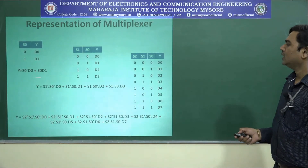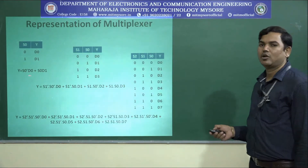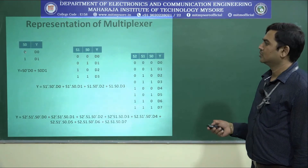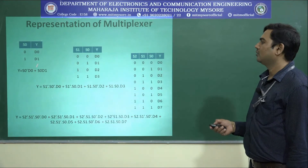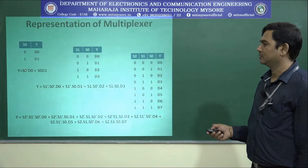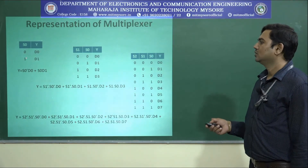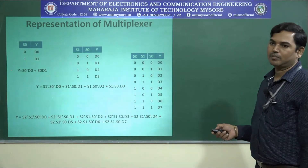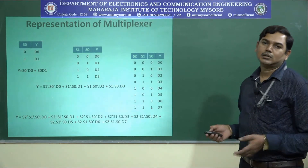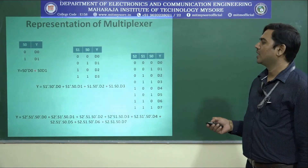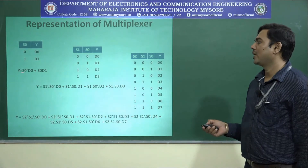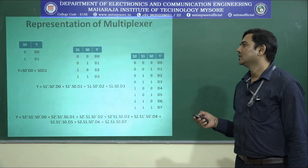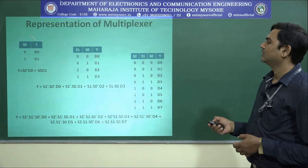The output equation Y in terms of S-naught, D0, and D1 can be represented using min-term representation. When S-naught is 0, we get S-naught-bar dot D0; when S-naught is 1, we get S-naught dot D1. So Y equals S-naught-bar D0 plus S-naught D1. In HDL data flow description, you would write: assign Y = S_naught_bar AND D0 OR S_naught AND D1. When you synthesize this HDL code, you will have a netlist representing a 2-to-1 multiplexer.